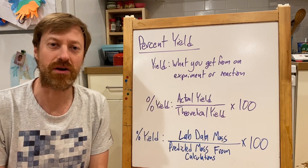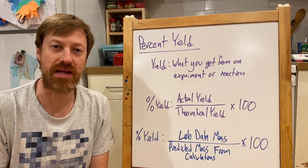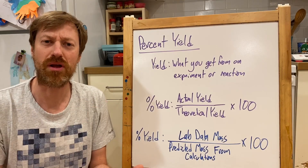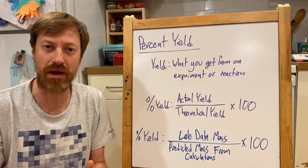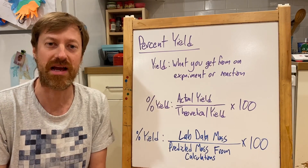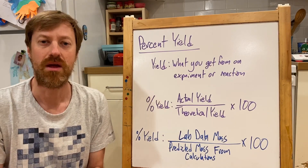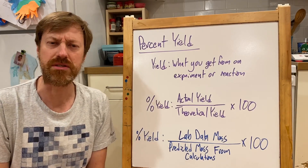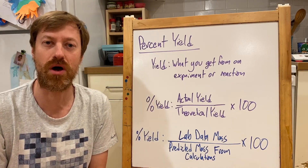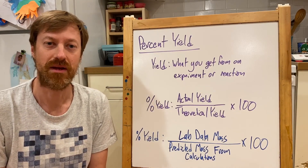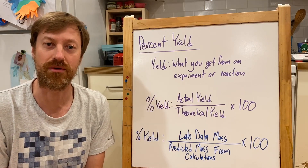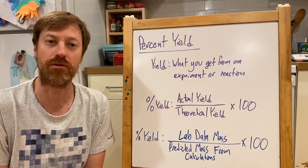Some reactions have very low percent yields, and that's because they might have a lot of other reactions going on apart from the one that you're looking for — those other reactions are called side reactions. Other reactions might have a very high percent yield, very close to 100 percent. So your actual yield and theoretical yield would be extremely close to one another if you're near 100 percent.